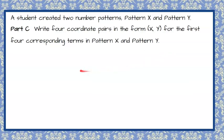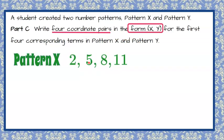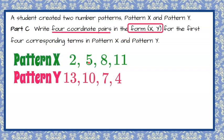Welcome back. So in part C, we're writing four coordinate pairs in the form (X, Y), and we're going to do it for pattern X and pattern Y in their corresponding terms. Meaning pattern X and Y, their first term is 2 and 13 in the form of an ordered pair. Our X is 2, Y is 13. So parentheses surrounding our ordered pair, the values of X and Y separated by a comma.